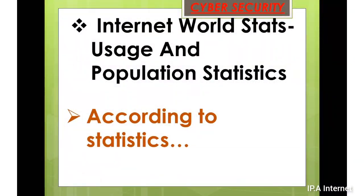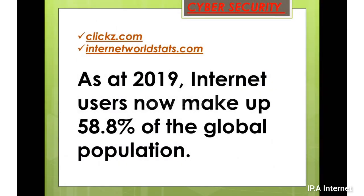The next slide covers internet world stats — usage and population statistics. If you visit internetworldstats.com, you can get information about how people use the internet, how many percent are using it and how many are not. According to their statistics, in 2019, internet users now make up 58.8% of the global population — meaning more people are using the internet than not.